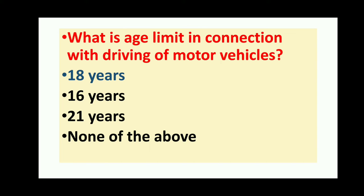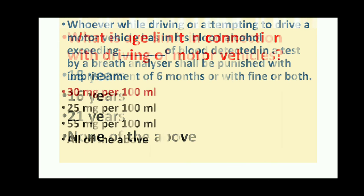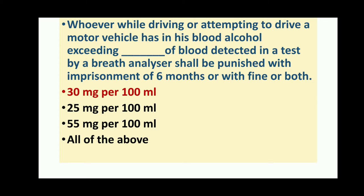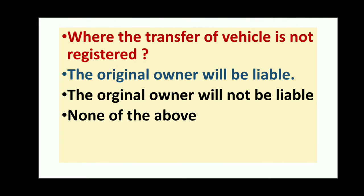What is the age limit for driving a motor vehicle? 18 years. Whoever while driving a motor vehicle has in his blood alcohol exceeding 30 mg per 100 ml of blood detected by a breath analyzer shall be punished with imprisonment up to 6 months or fine or both. Where the transfer of a vehicle is not registered, the original owner will be liable.